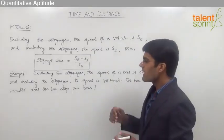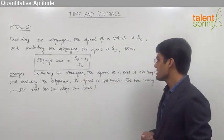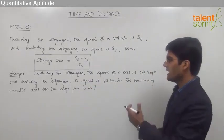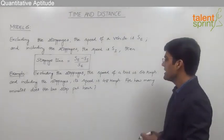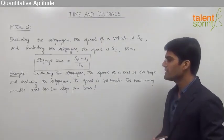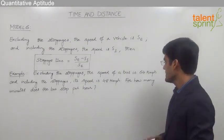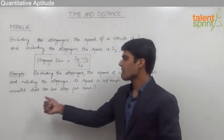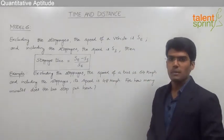Let us look at an example. Excluding the stoppages, the speed of a bus is 64 kilometers per hour, and including the stoppages, its speed is 48 kilometers per hour. For how many minutes does the bus stop per hour? We need to find out the number of minutes for which the bus stops per hour.